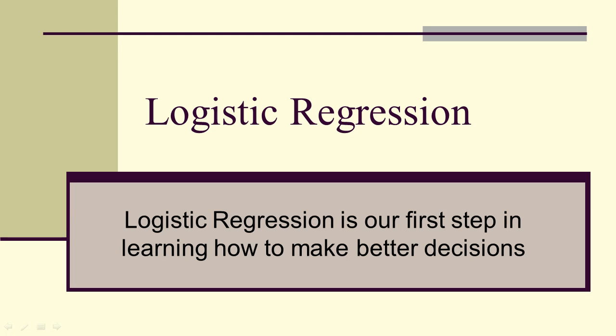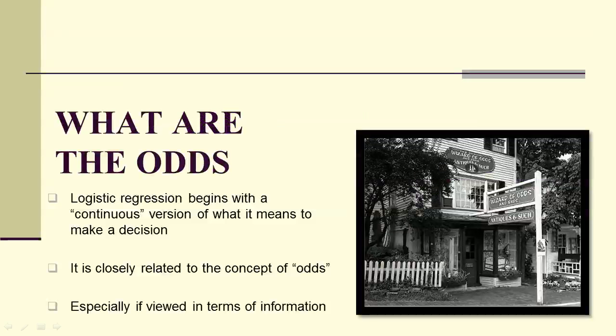Decision trees are graph theoretic or network trees where decisions are made at nodes. Logistic regression is our first step in learning how to make better decisions. It's going to be based on odds, especially when we look at information.